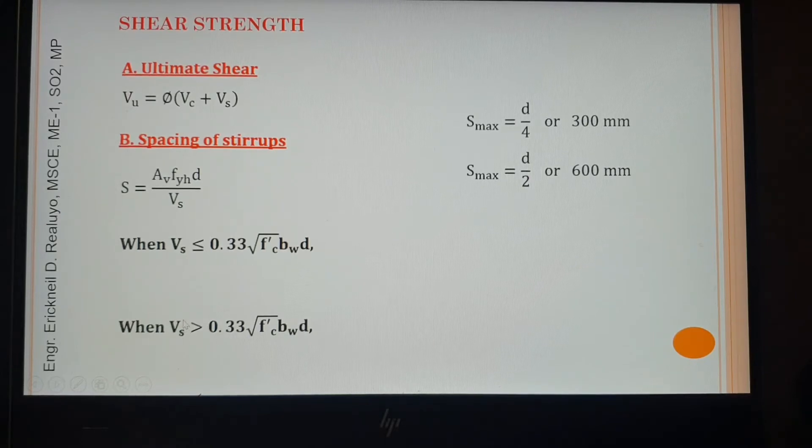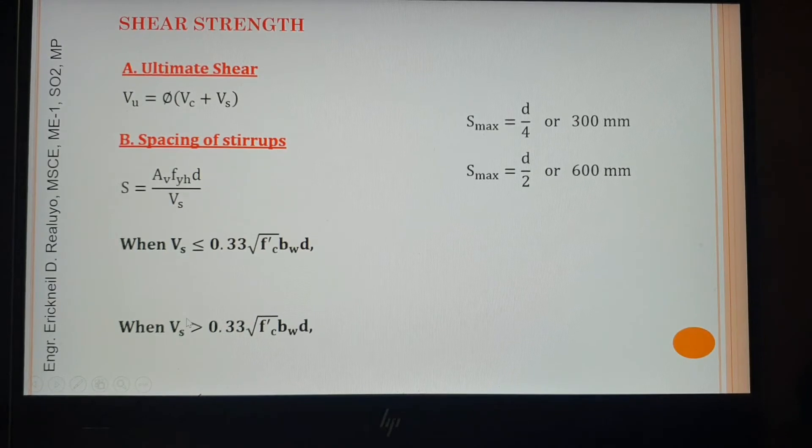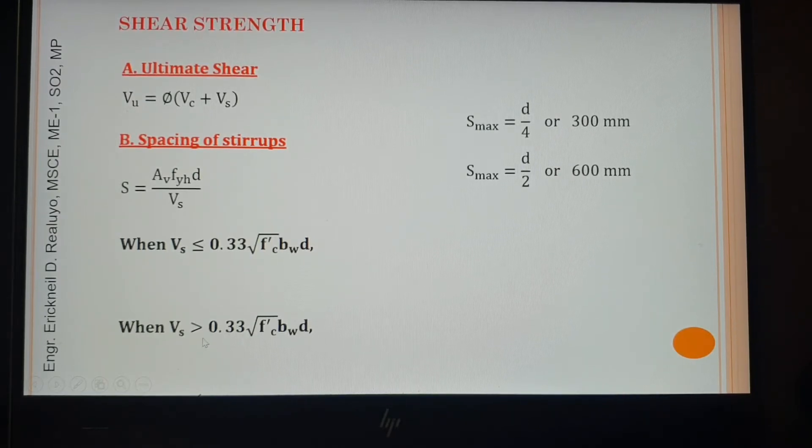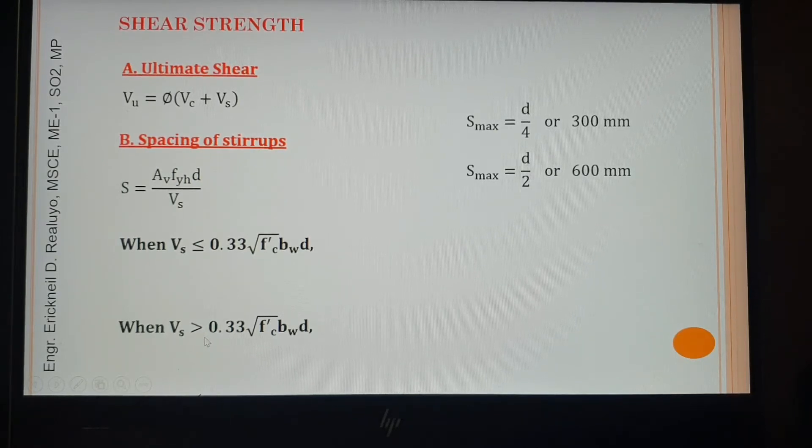We can say that because of the fact that, take a look at this one. I will call this Vs as the shear force to be carried by shear reinforcements. Say the shear reinforcement is stirrup, assuming that we are considering a beam. If the shear force to be carried by stirrups is very large because of the fact that it exceeded already the 0.33 squared of F'c times b times d, then therefore the stirrups should be laid or should be arranged with a small value of spacing.